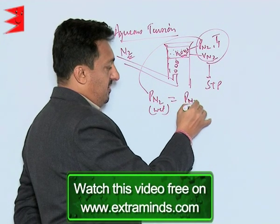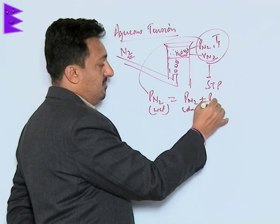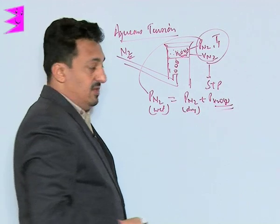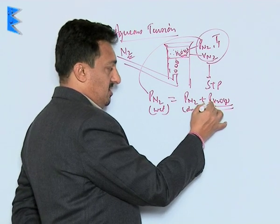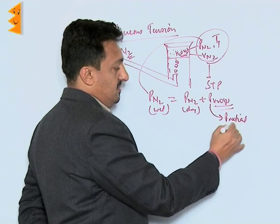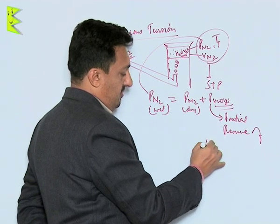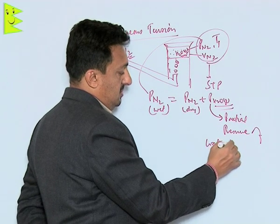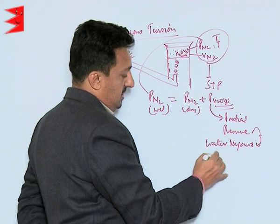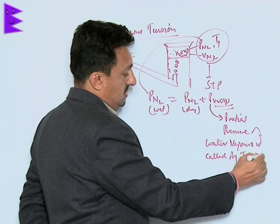This wet nitrogen pressure equals the pressure of dry nitrogen plus the pressure of water molecules existing in the gaseous state. This partial pressure of water vapors is called aqueous tension.